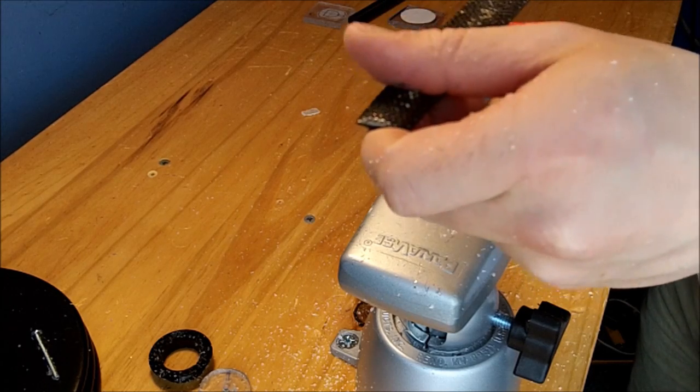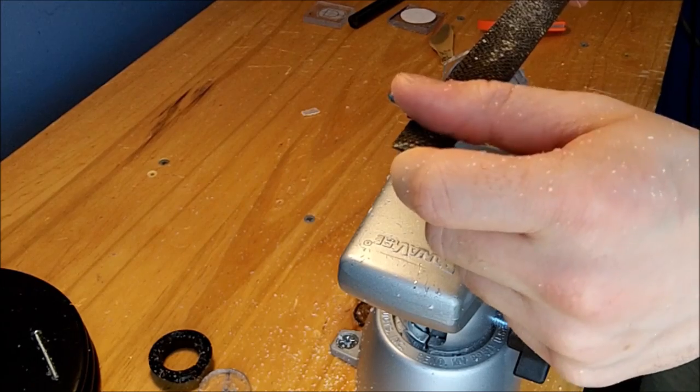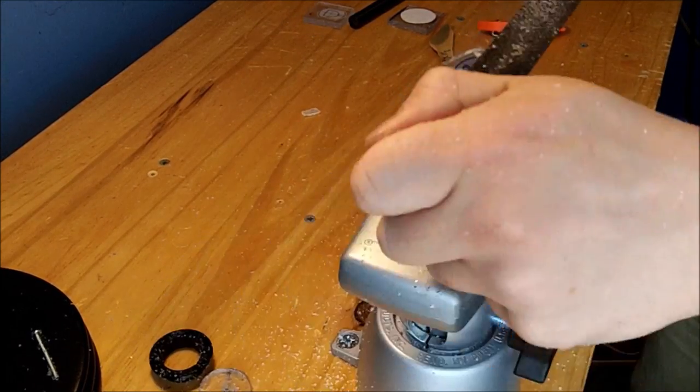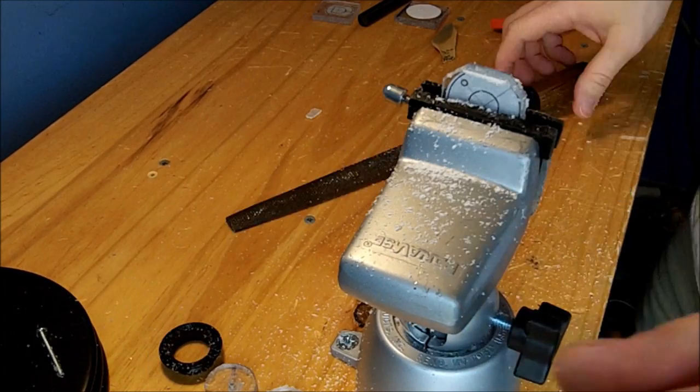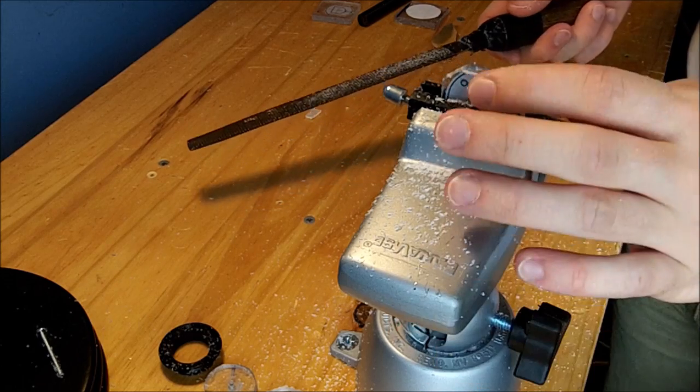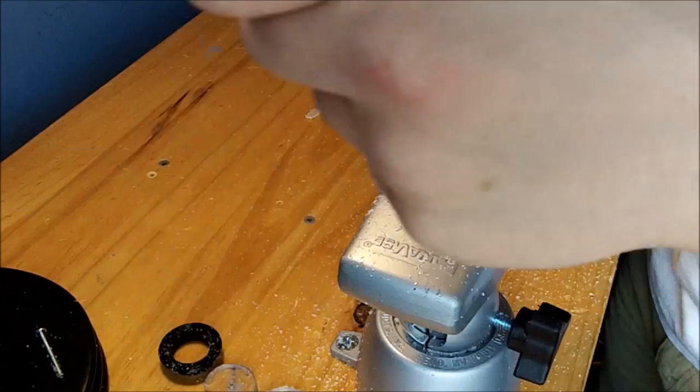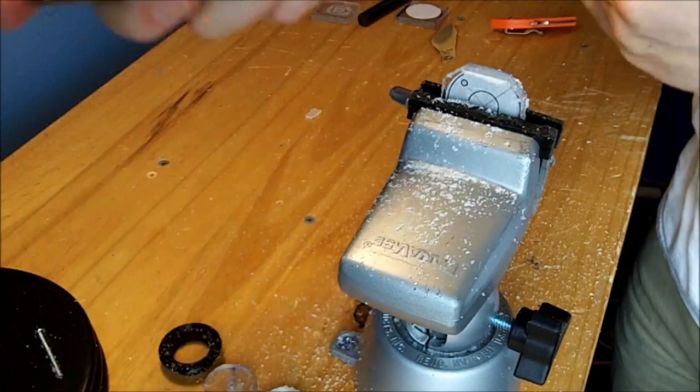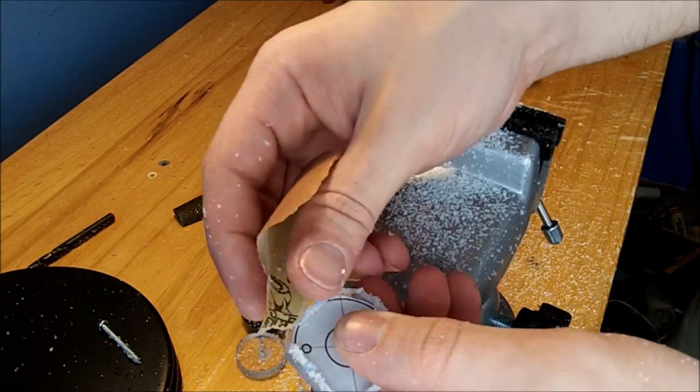Take your rasp and on each side of the octagon, simply file it right up to the black line on your template. When you get close to the paper, file away from the paper. That way it doesn't pull it off. If I file this way, the paper will start to peel off. And deburr as necessary.